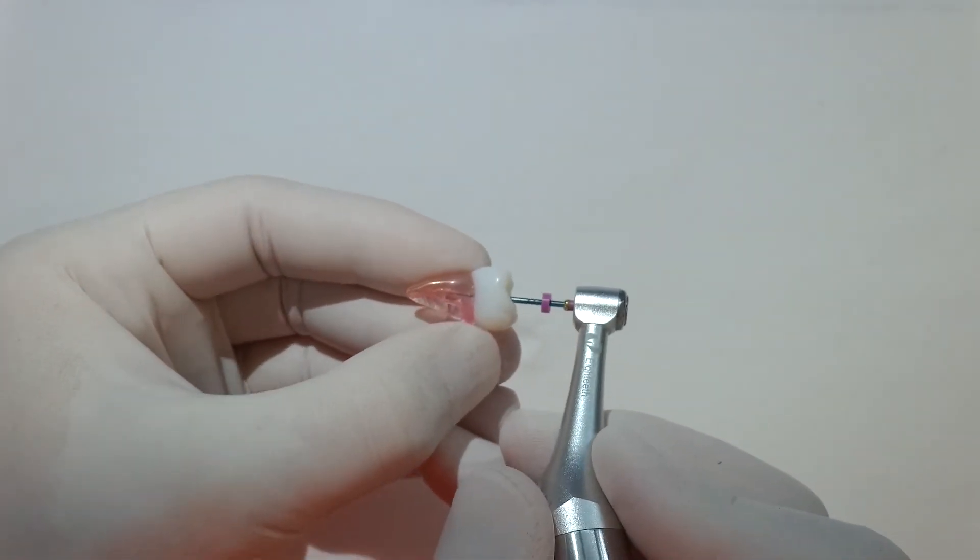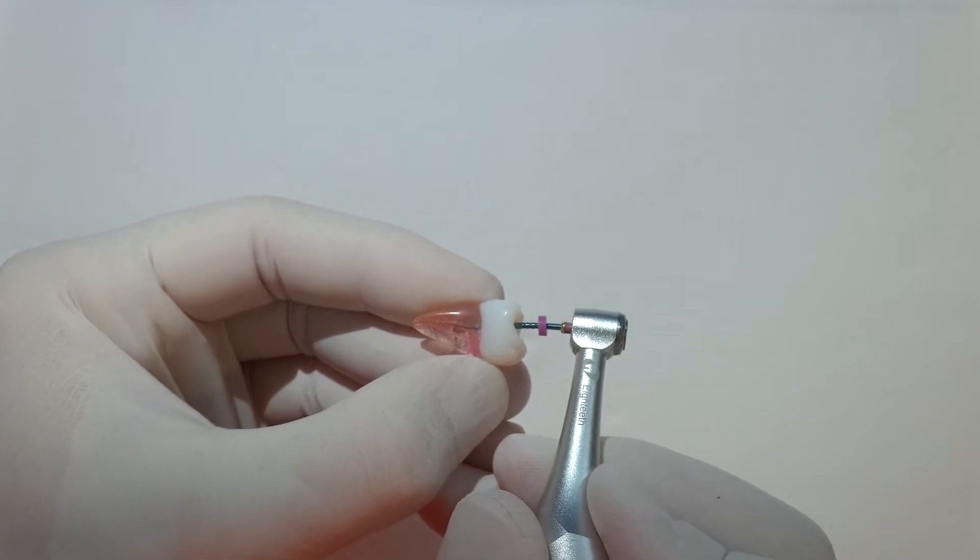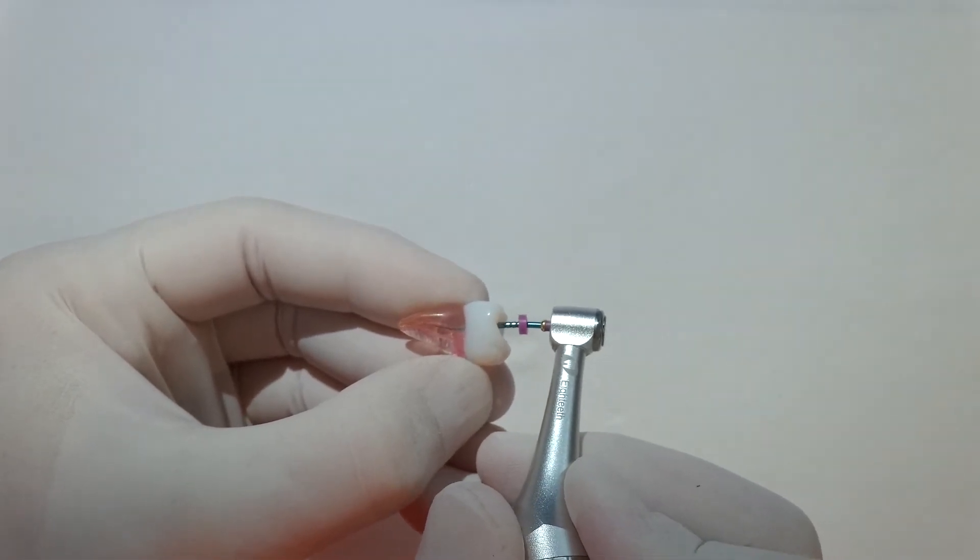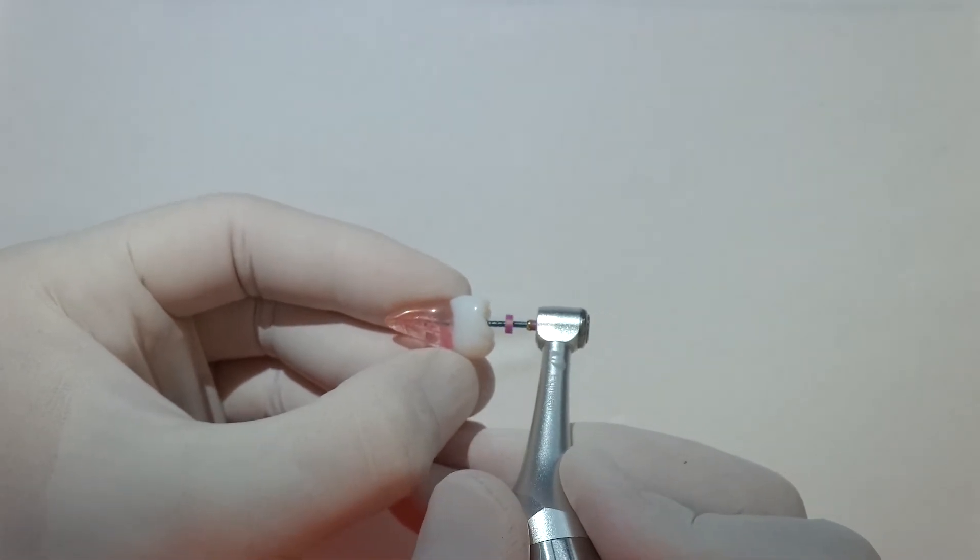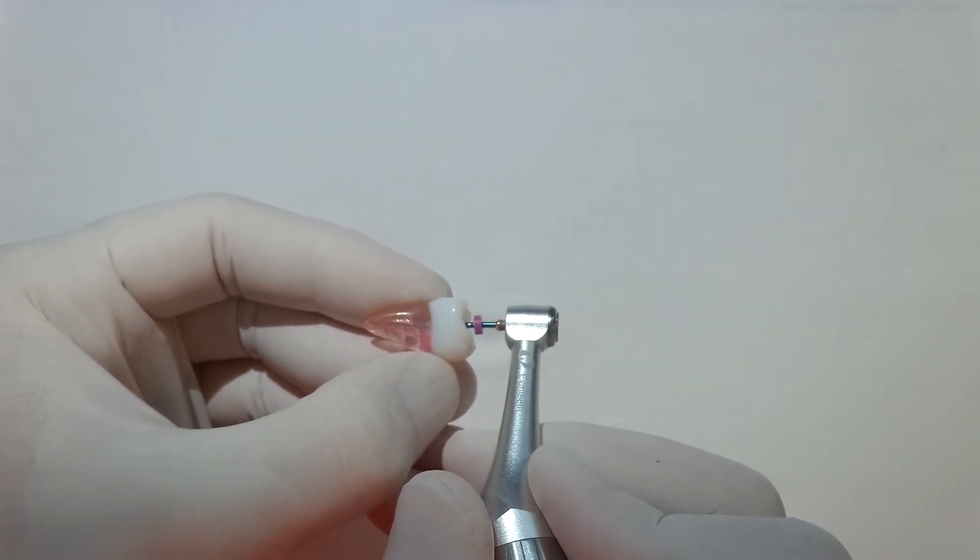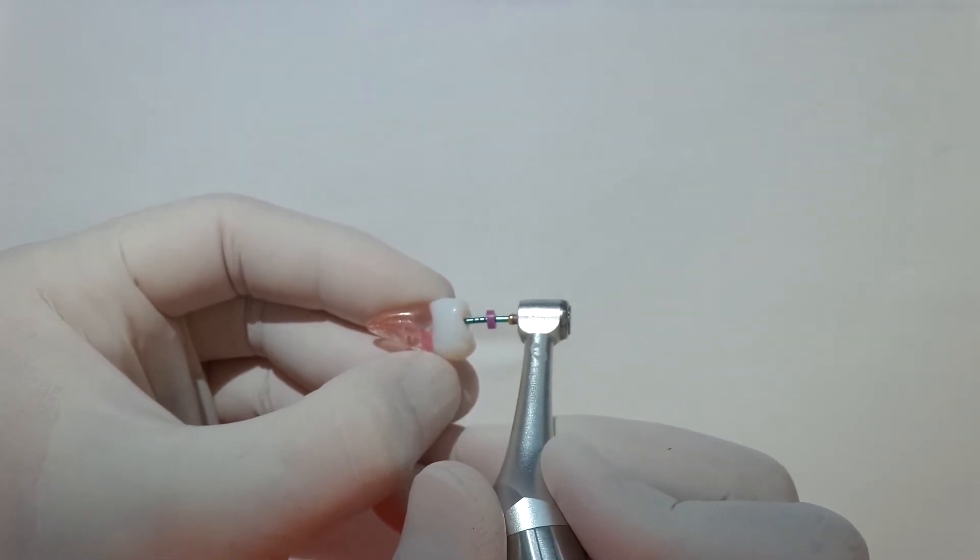Gradually introduce our S1 file. This is mainly to do the coronal flare. The apical part of the file is just guiding, and that just ensures it stays centered in the canal. Then we can just brush on the outward stroke until we reach our working length.